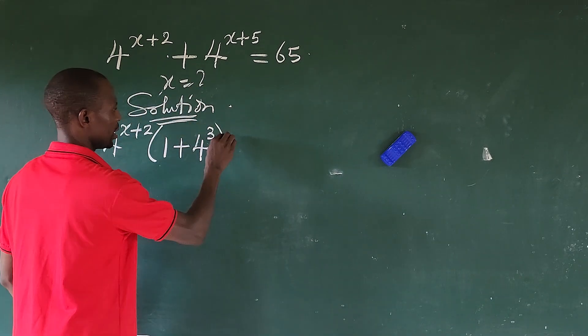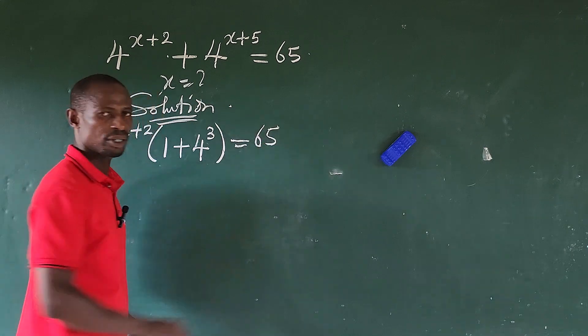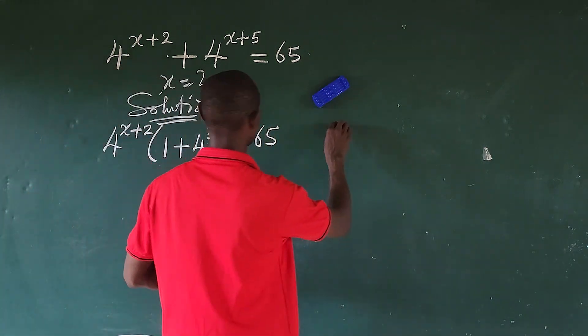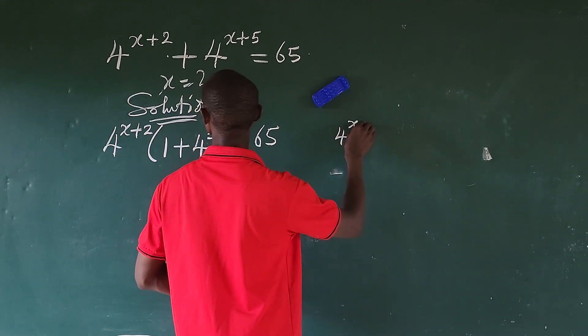This is equal to 65. Confused? No. Now look at what I just did here. If you use this to divide this, we'll have 4 to the power of x.